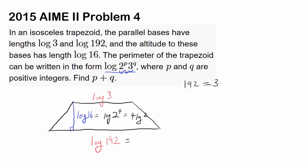192 is 3 × 64 or 3 × 2^6. We can break this apart as log 3 + log 2^6. That equals log 3 + 6 log 2.